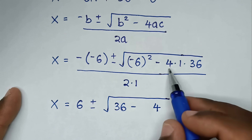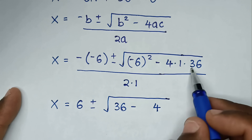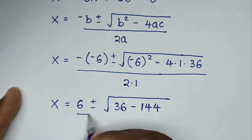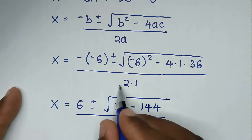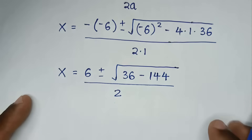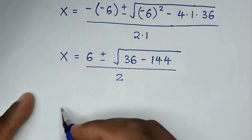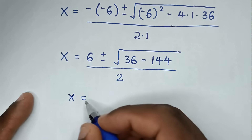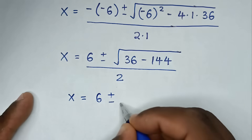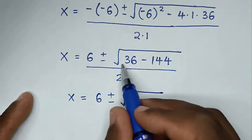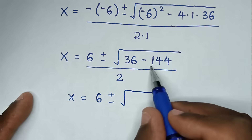The denominator is 2a, which is 2. So x is equal to 6 plus or minus square root of 36 minus 144.